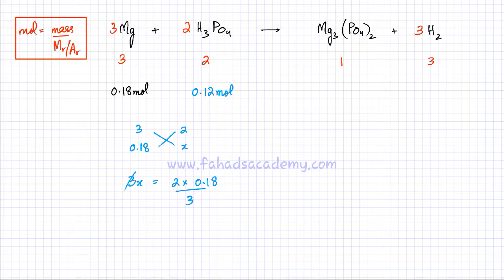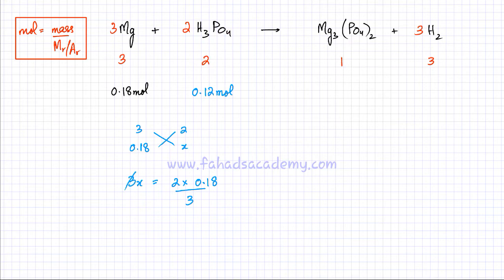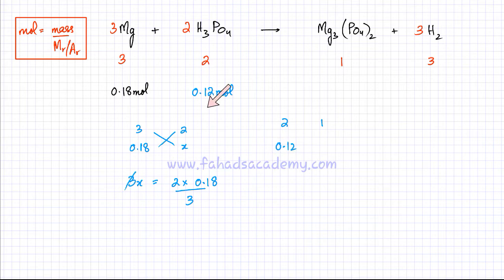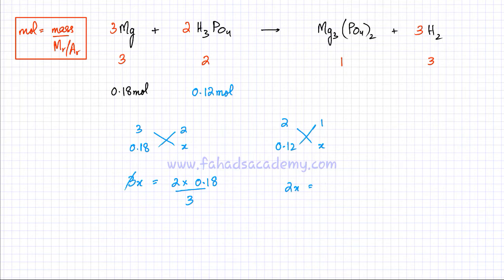Now I want to figure out how much magnesium phosphate would be produced. Two phosphoric acid molecules produce one magnesium phosphate, so I can use that ratio. If I have 0.12 moles, they are going to produce x amount of magnesium phosphate. Cross multiplying: 2x = 0.12 × 1, divide by 2, giving 0.06 moles.